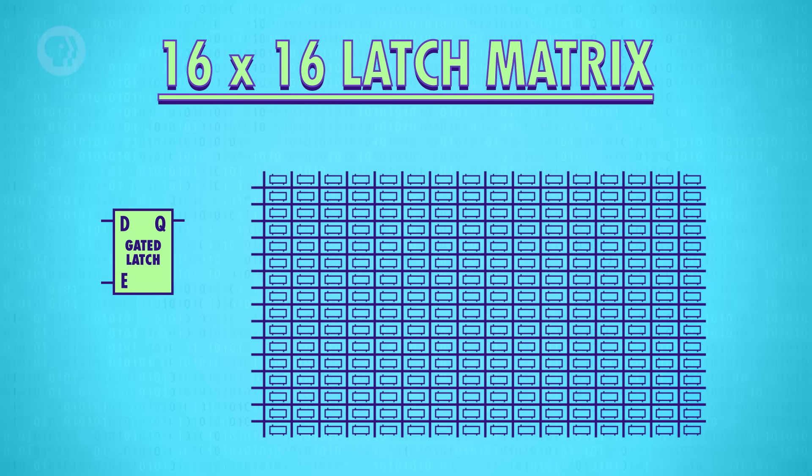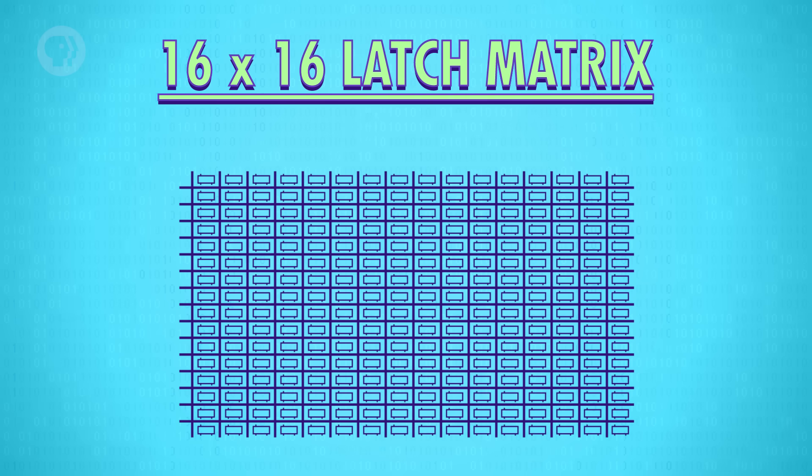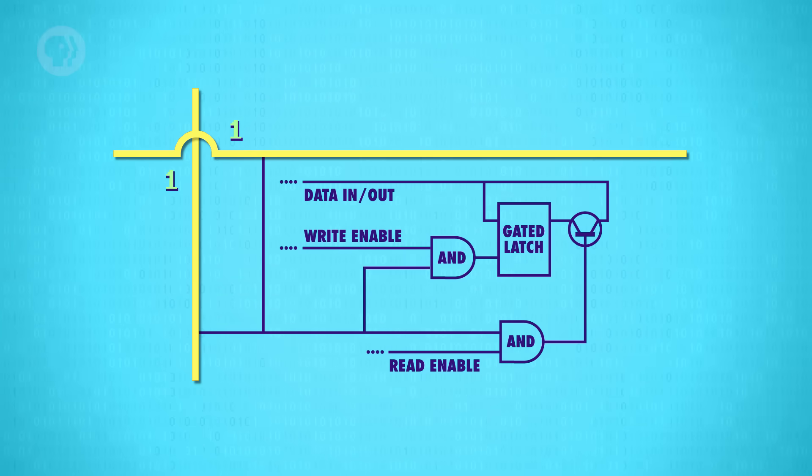In this matrix, we don't arrange our latches in a row. We put them in a grid. For 256 bits, we need a 16 by 16 grid of latches, with 16 rows and columns of wires. To activate any one latch, we must turn on the corresponding row AND column wire. Let's zoom in and see how this works.